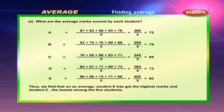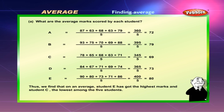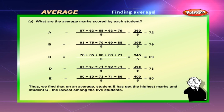For student B: 93 + 75 + 70 + 69 + 88 divided by 5 is equal to 395 divided by 5, which gives 79. For student C: 78 + 65 + 68 + 63 + 71 divided by 5 is equal to 345 divided by 5, which gives 69.